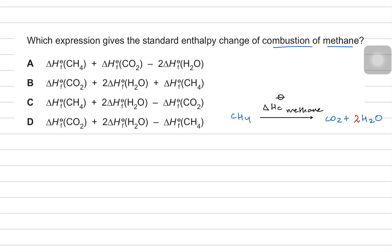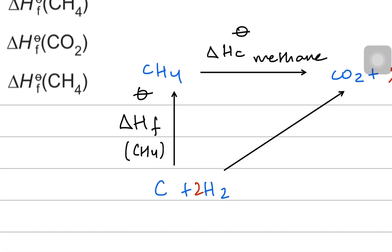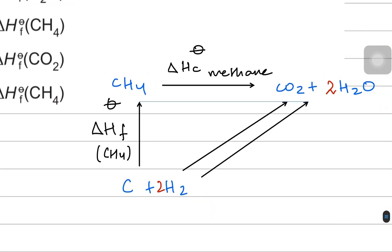In the MCQ options we have formation of water, formation of carbon dioxide, and formation of methane. Starting from the pure elements — carbon and hydrogen — to make methane gives you the standard enthalpy of formation for methane. The other path is making pure carbon dioxide and water from the same elements.